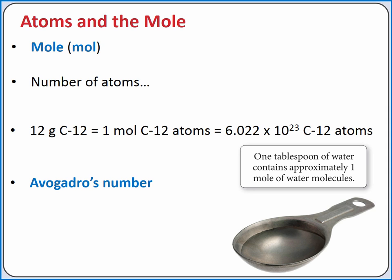The mole is the SI unit for quantity of a substance. The mole is defined as the number of atoms in exactly 12 grams of the isotope carbon-12. The number is 6.022 times 10 to the 23rd power. This number is also called Avogadro's number.